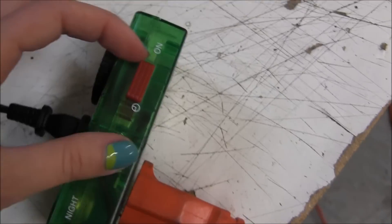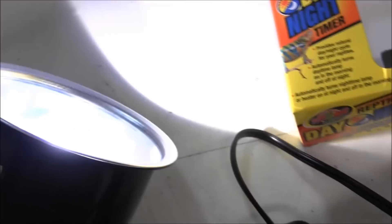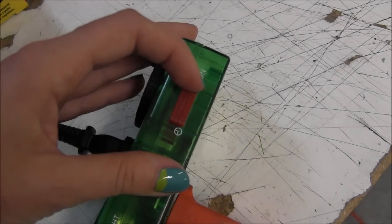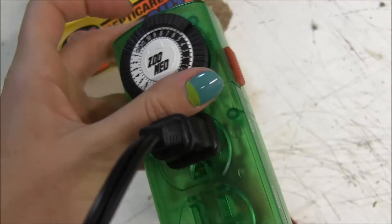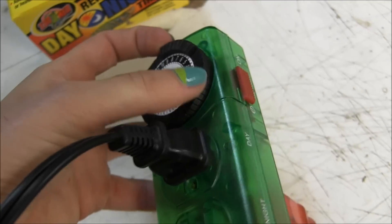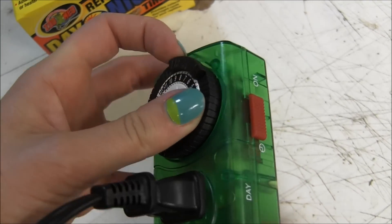What you're going to do is make sure that it's not set to on, which will turn your light on. You want it set to timer. I've got this plugged into day, and for this particular type of timer, day is going to be the down, and then night is going to be up.